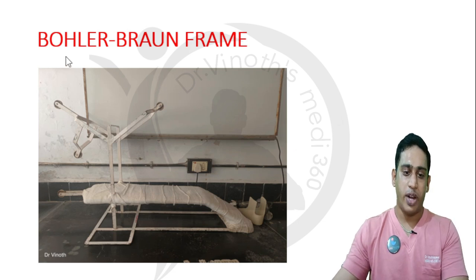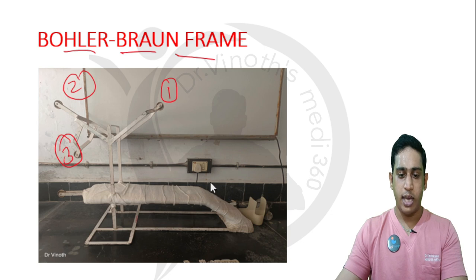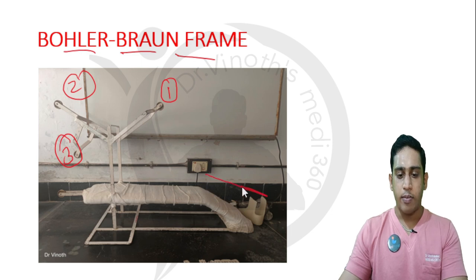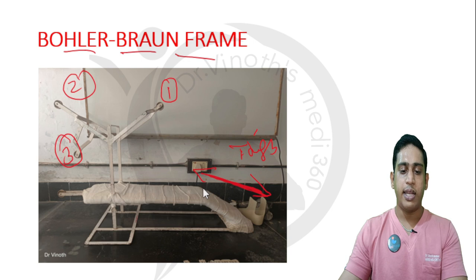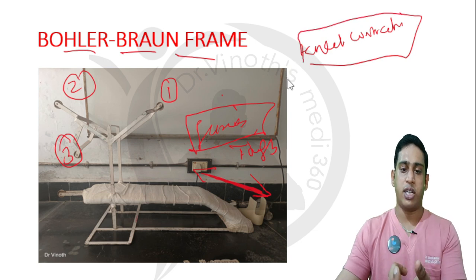Next, the Böhler-Braun frame — a special equipment for providing traction. Here you can see three pulleys. It is not straight as in the Thomas splint; there is an angle to accommodate the thigh, maintaining a certain degree of flexion at the knee joint. This prevents knee contracture. Since the knee is maintained in flexion rather than extension, it is better for mobilization postoperatively.